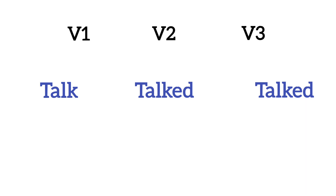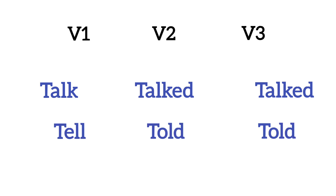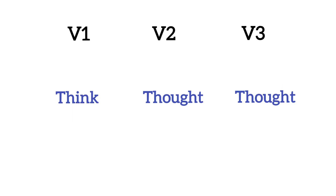Next is 'talk' — talk means baat karna (to talk). Its second form is 'talked' and third form is also 'talked'. Next is 'tell' — tell means kuch batana (to tell). Its second form is 'told' and third form is also 'told'. Note the minor difference: talk means baat karna, while tell means kuch batana. Next is 'think' — think means sochna (to think). Its second form is 'thought' and third form is also 'thought' — both the same.